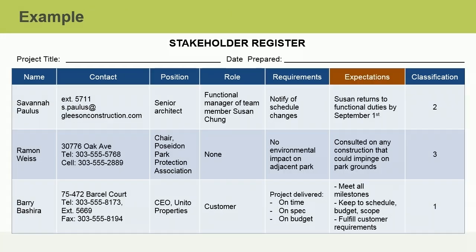Here is an example where the names, contact information, positions, and roles have been filled in for the first three stakeholders. The Requirements column contains each stakeholder's high-level wants or needs. The Expectations column contains notes on how the stakeholder expects the project to function, including the method and type of communication each expects to receive. The last column contains the classifications the project manager has determined for each stakeholder when she uses the stakeholder classification matrix. She will use this classification to prioritize her time and attention and to determine an appropriate strategy to keep the stakeholder engaged with the project. You can use any classification method that you want — a one may signify high power and high interest, and a three low power and low interest.